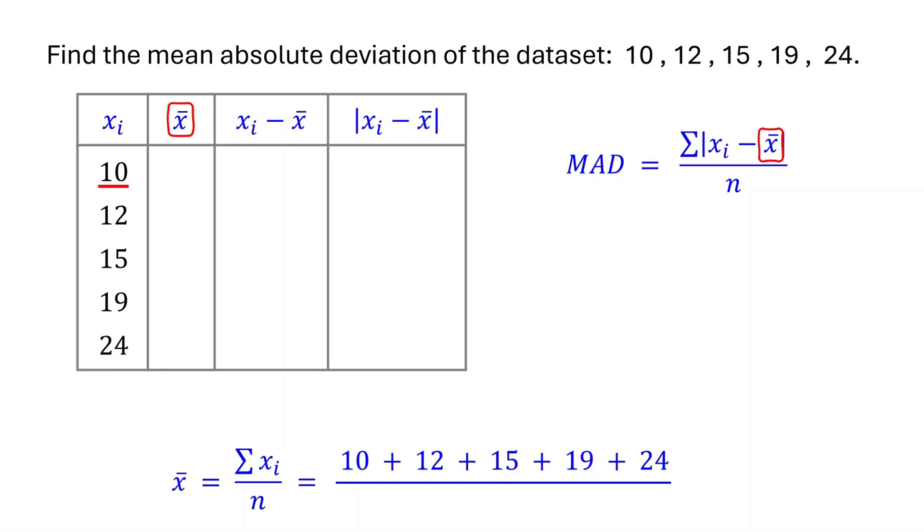Here, we have 1, 2, 3, 4, 5 data points. So n equals 5. Therefore, we divide by 5.